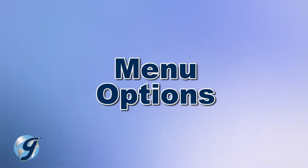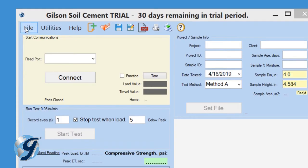Before we start, let's review the menu options. At the top of the window we have File, Utilities, and Help.